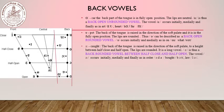The next is /ɔː/ as in 'cot' — this is also a long vowel, as you can see the colon placed after the symbol. During articulation, the back of the tongue is raised in the direction of the soft palate to a height between half close and half open. The lips are rounded. It is a long vowel, and /ɔː/ is thus a back rounded vowel between half close and half open — the tongue will be in the centre, neither on top nor at the bottom. The vowel /ɔː/ occurs initially, medially, and finally, as in 'order', 'bot', and 'law'.